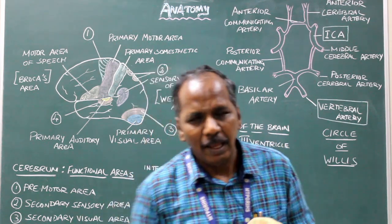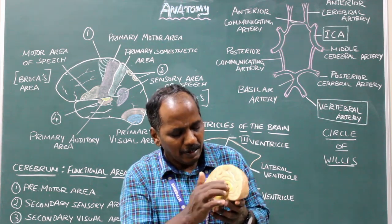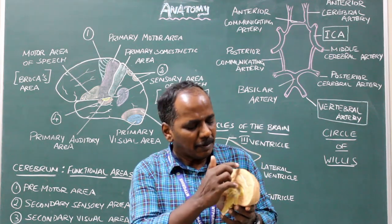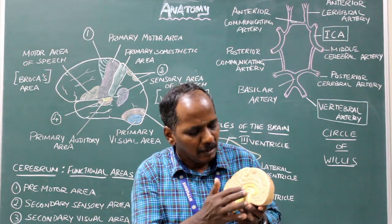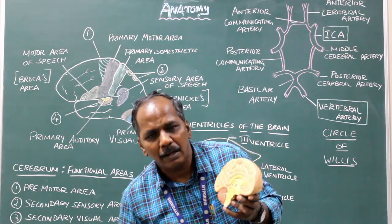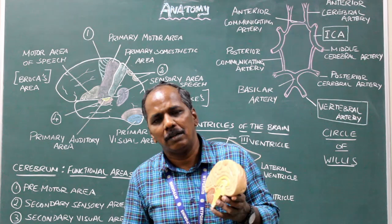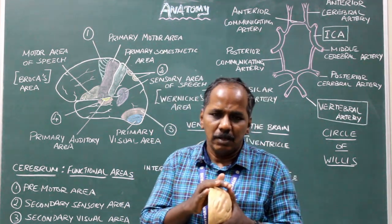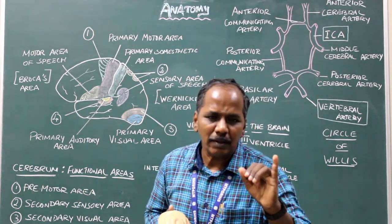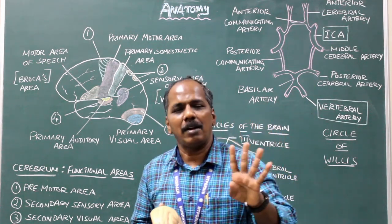Projection fibers interconnect the cerebral cortex with subcortical areas or the spinal cord. For example, from the primary motor area to subcortical areas such as the thalamus, midbrain, pons, medulla oblongata, or the spinal cord. Examples of projection fibers include the internal capsule, corona radiata, fimbria, and fornix.